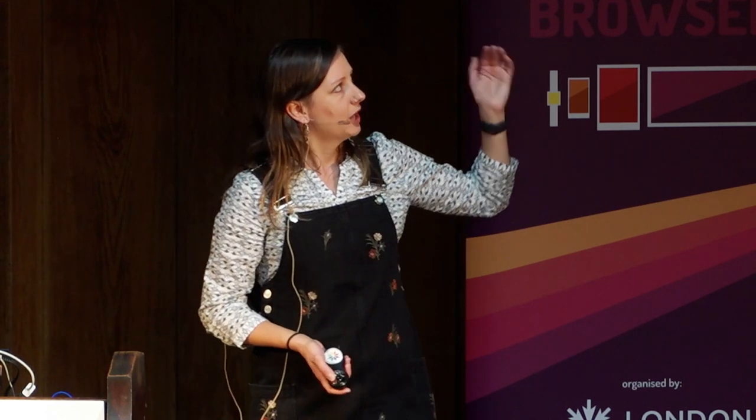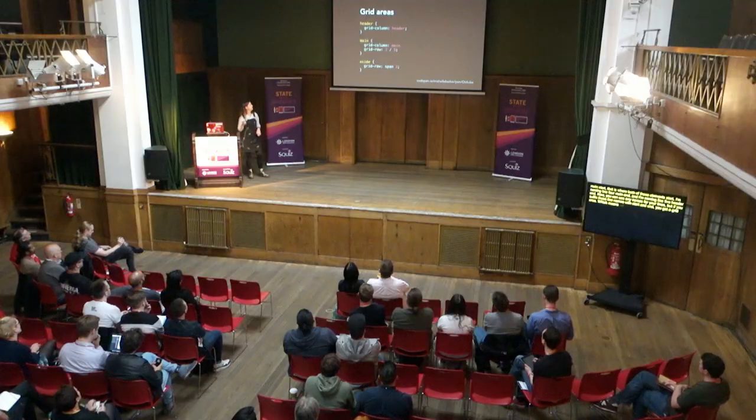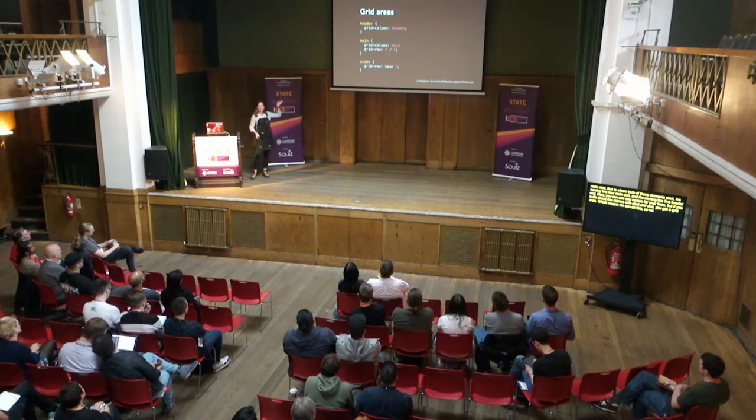Another way to place items is by naming lines. In the grid declaration I have line names: header-start, main-start, main-end, and header-end. I'm naming line one as header-start and main-start, because that's where both elements start. I'm naming line four as main-end, and line five as header-end. You can use any names for your lines, but if you suffix those names with start and end, you get a grid area. That means we can simply say: put our header in the header area, and put our main in the main area.